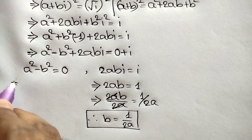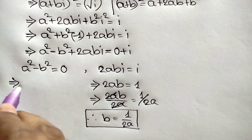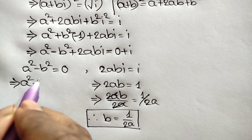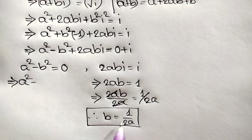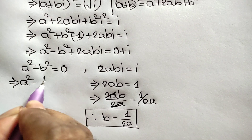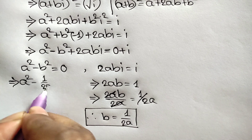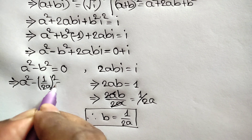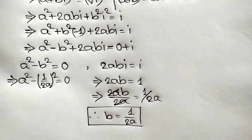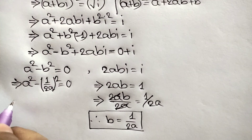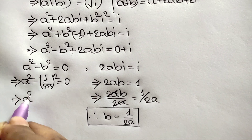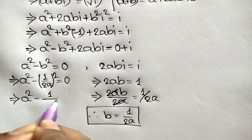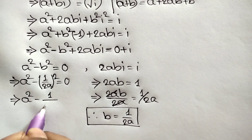Substituting b equals one over two a into a squared minus b squared equals zero: we get a squared minus one over two a whole squared equals zero, which gives a squared minus one over four a squared equals zero.